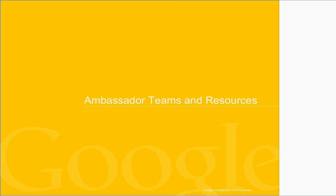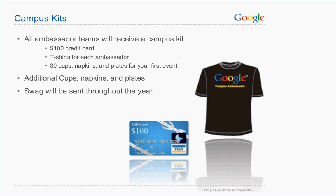Alex will now talk about ambassador teams and resources. You're all going to get campus kits sent to one person on your team. It will include t-shirts for everybody, a $100 credit card for events, 30 cups, napkins, and plates for your first event involving food — probably a study break. If you hold other events that need cups, napkins, and plates, we have a large supply and can send them whenever you need. You'll sign up for that in the form you fill out.